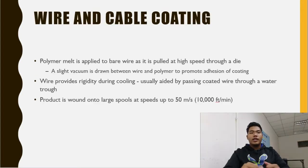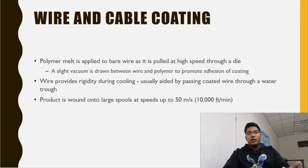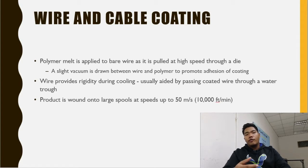The next method is extrusion for cable coating. Polymer is applied to bare wire as it passes at high speed through a die. Wire provides rigidity during cooling, usually aided by passing the coated wire through water. The coated wire is then drawn into a large spool at speeds up to 50 meters per second or 2000 feet per minute.